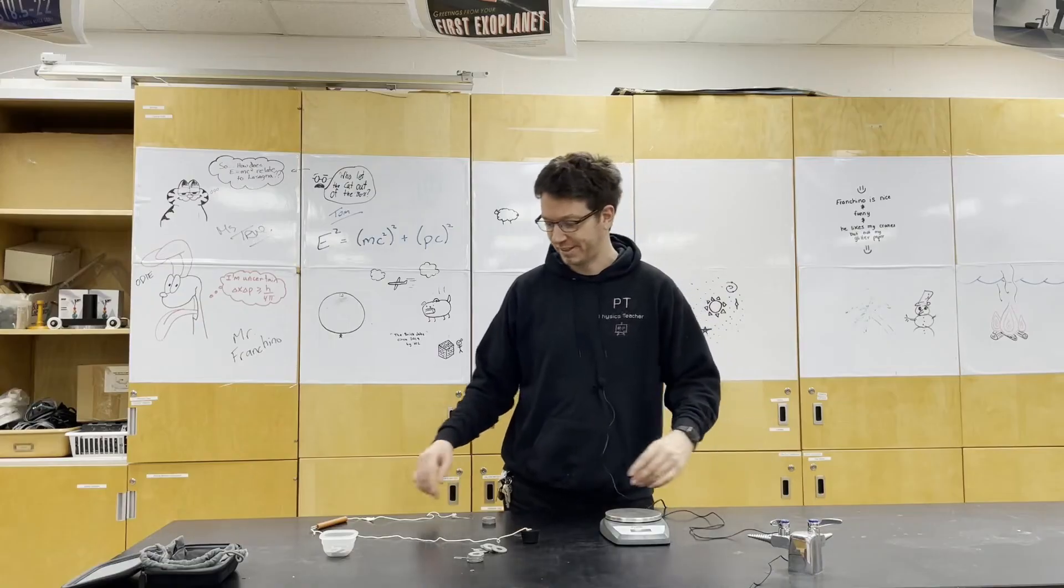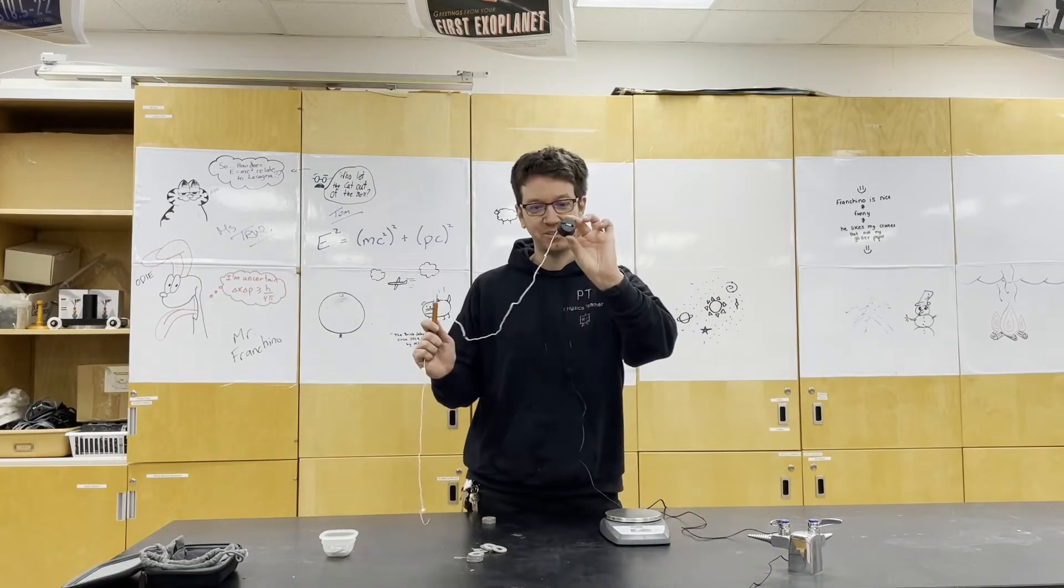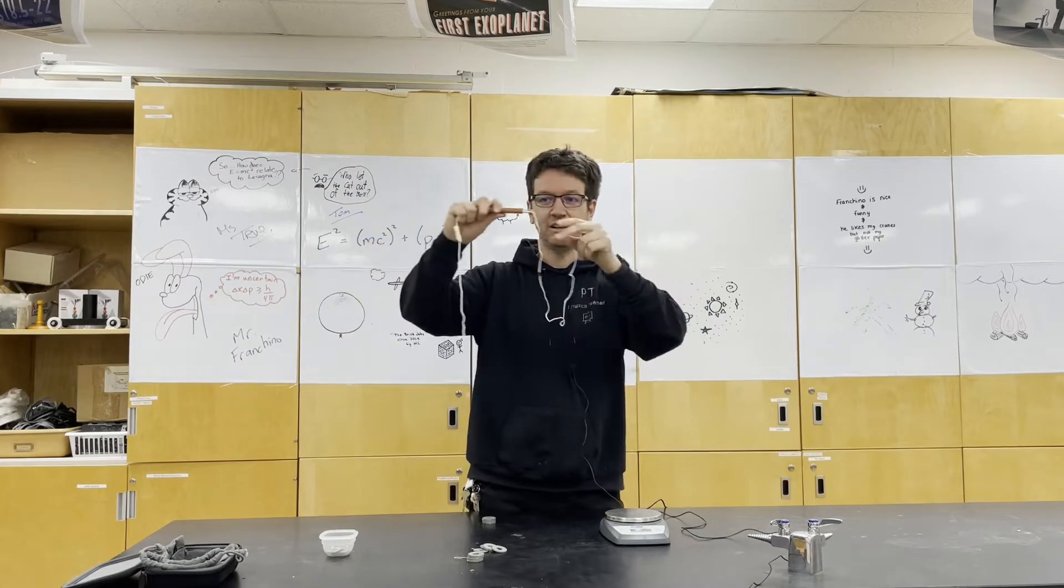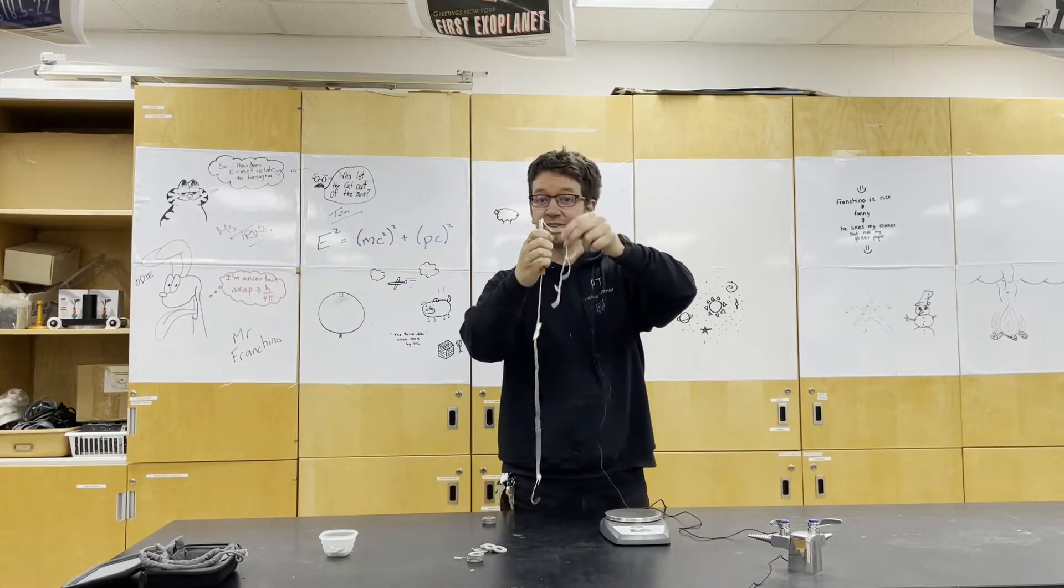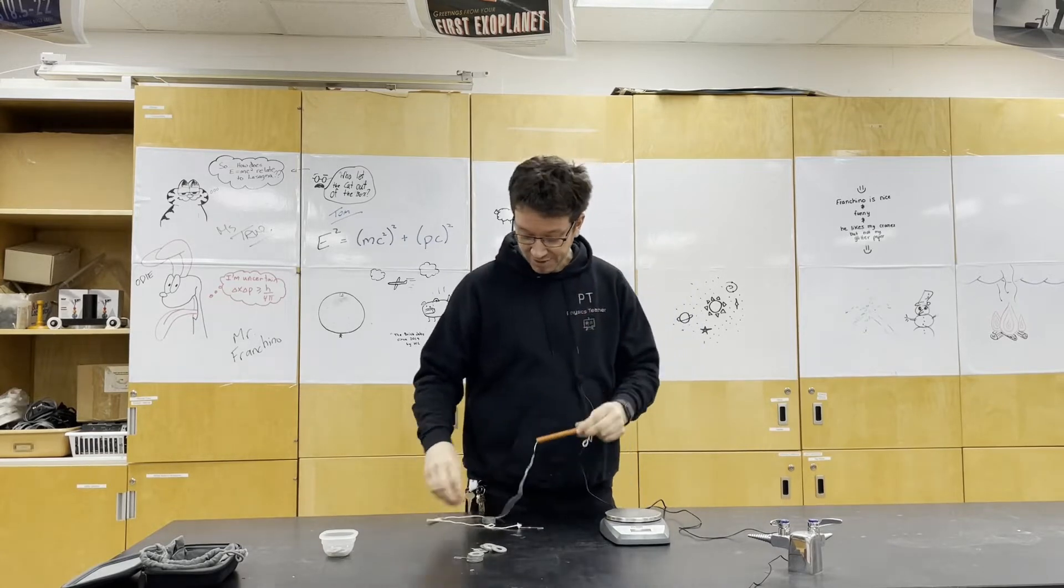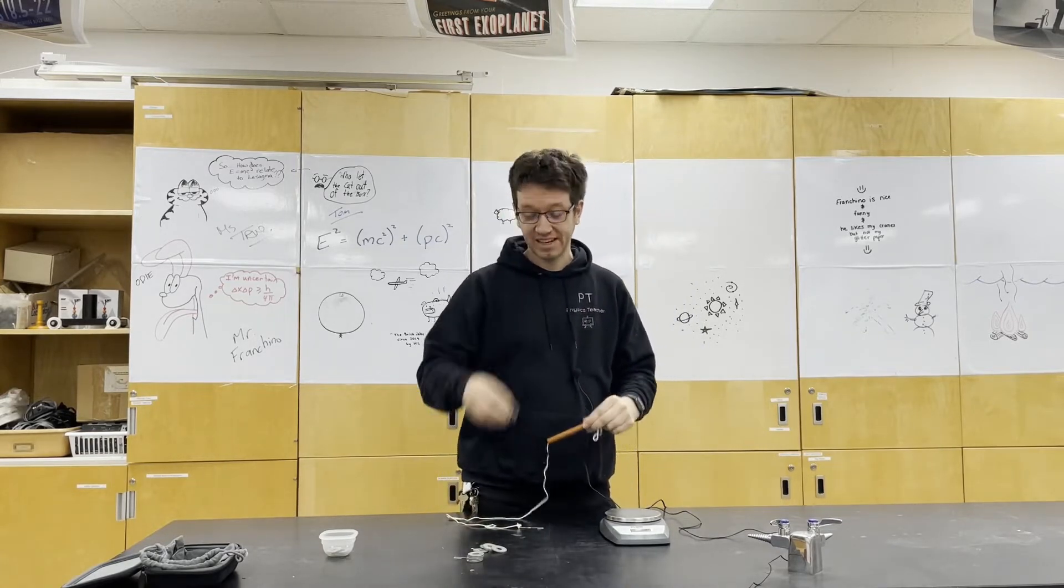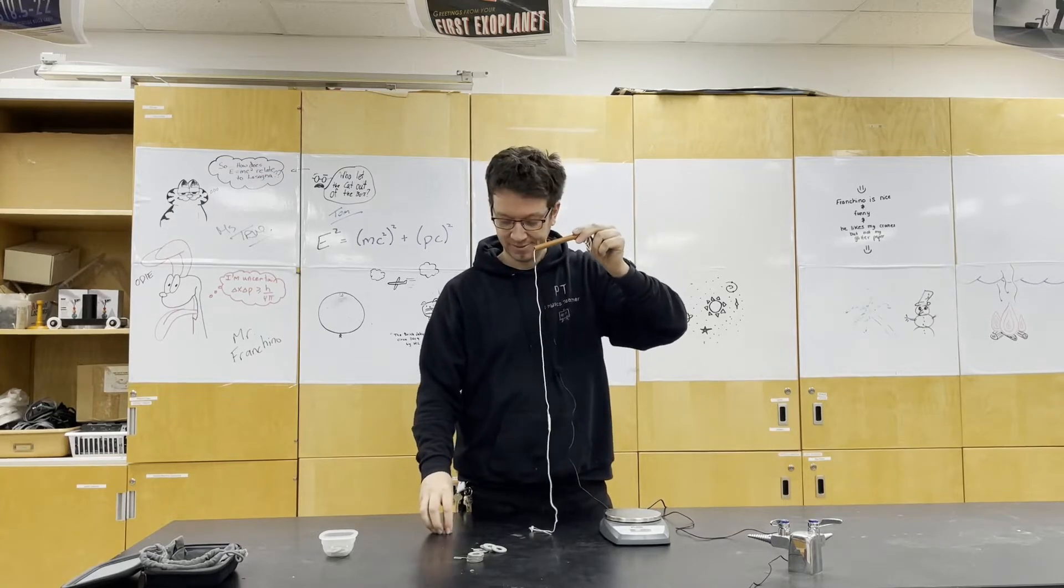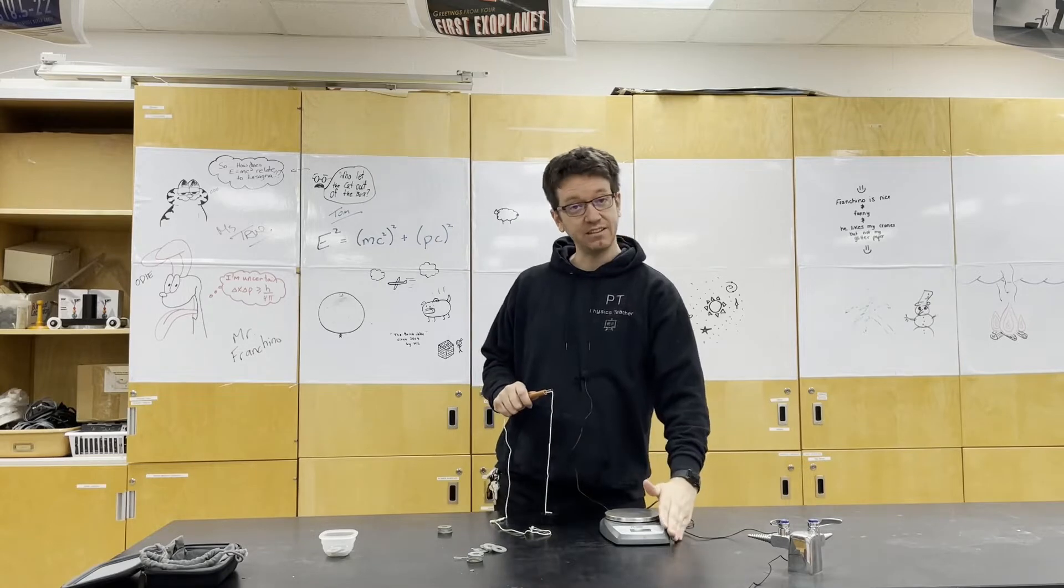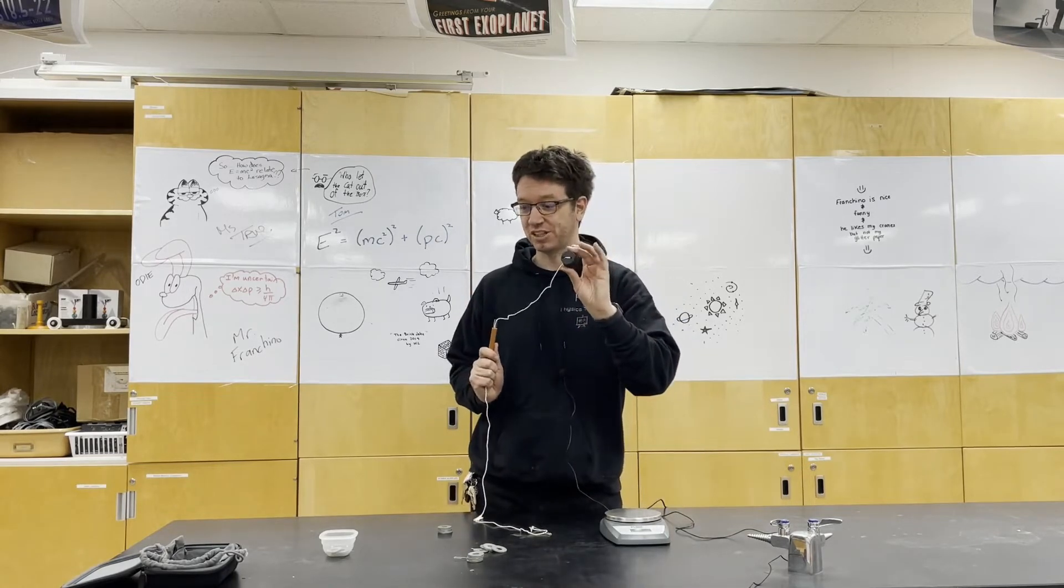Let's go over our equipment. Here we have a rubber stopper attached to a string that can go through freely this tube. The tube is what I'll hold on to, and then I have a bunch of washers that I can attach to the other end of the string that's just going to hang there. And of course, I have a scale to determine the mass of the washer.